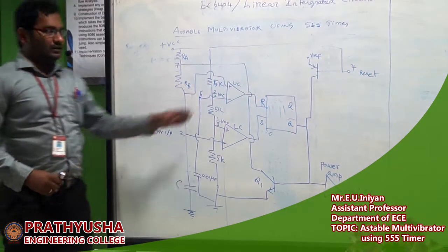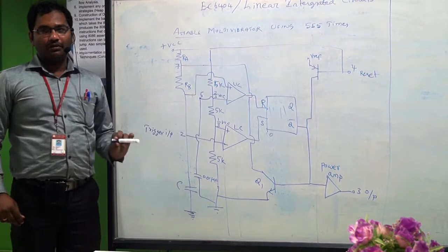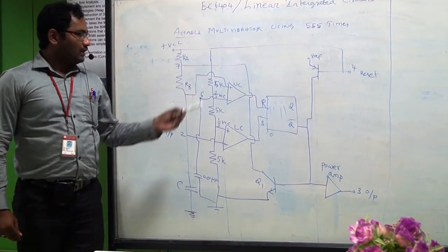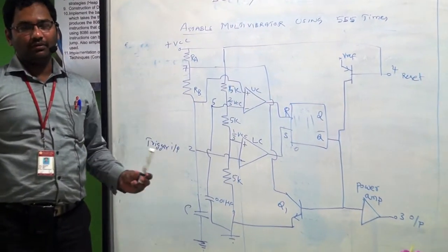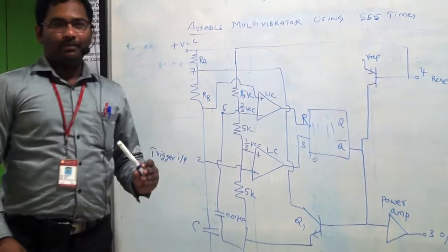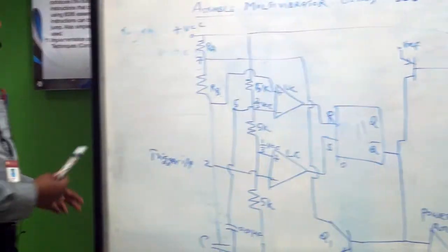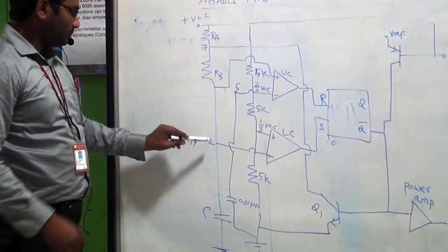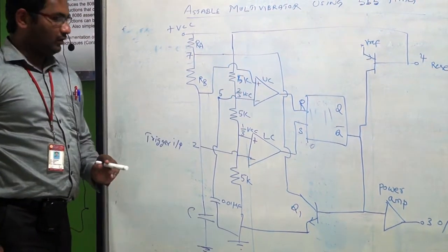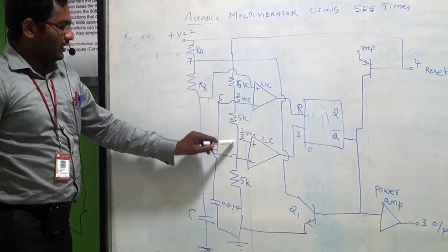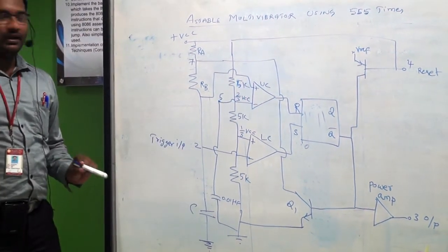We know that the concept of a comparator is: when the non-inverting input terminal voltage is high compared to the inverting input terminal voltage, the output of the comparator should be high, otherwise it is low. Here, the trigger input voltage is given to the inverting input terminal of the lower comparator and 1/3 Vcc is given to the non-inverting input terminal of the lower comparator.